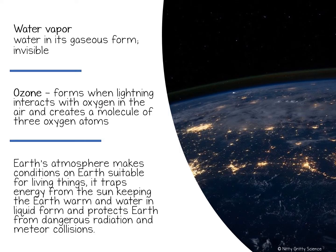The atmosphere is able to trap energy from the sun and it keeps most of Earth's surface warm enough for water to exist as liquid on Earth. The atmosphere is also important because it protects living things from dangerous radiation from the sun as well as preventing Earth's surface from being hit by most meteorites, which are chunks of rock from outer space.